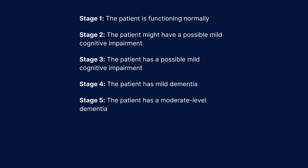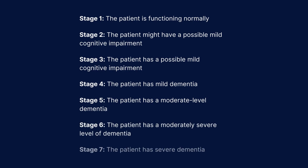At stage 5, the patient has a moderate level of dementia, and at stage 6, the patient has a moderately severe level of dementia. The final stage indicates that the patient has severe dementia, with stages 6 and 7 having several subsets.